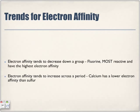Electron affinity tends to decrease down a group. Fluorine is the most reactive and has the highest electron affinity. It only needs one electron and really wants that electron badly because it is so close to reaching its stable octet form.